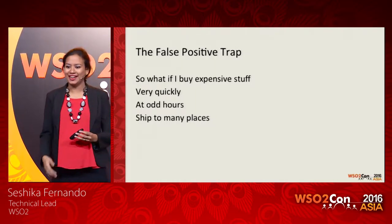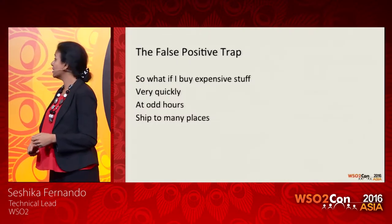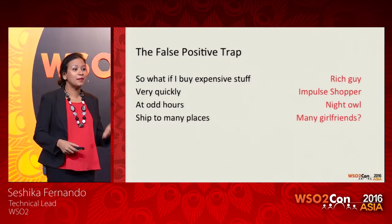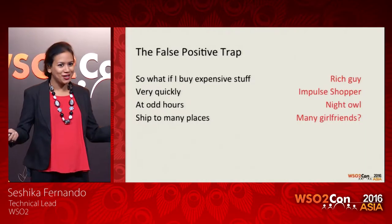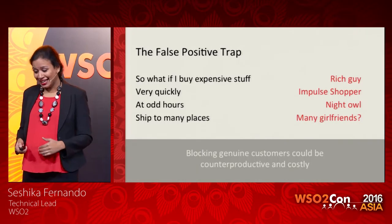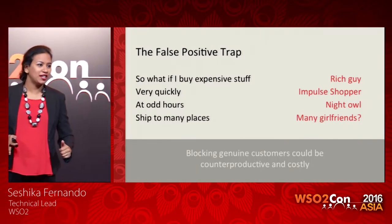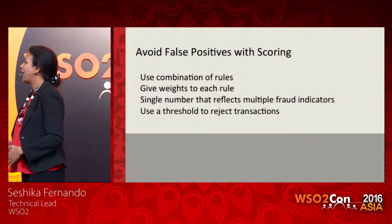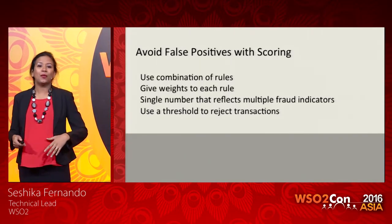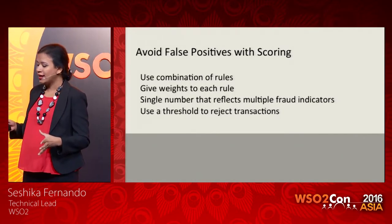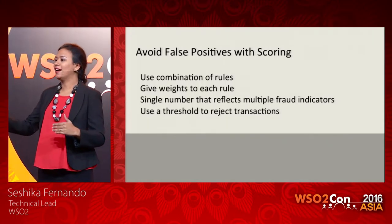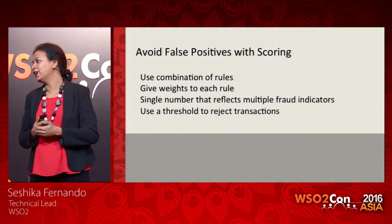What if someone buys expensive stuff legitimately, or buys very quickly, or at odd hours, or ships to many places? There could be a genuine customer behind any of these transactions. If someone wants to buy the most expensive item in your store, you don't want to stop that customer because your fraud detection rules are too strict — you'd lose business revenue. Blocking genuine customers because of very strict fraud detection rules could be counterproductive and costly, and we have to address that. That's where scoring comes into play.